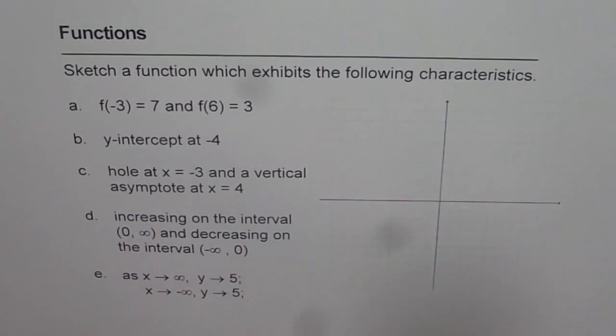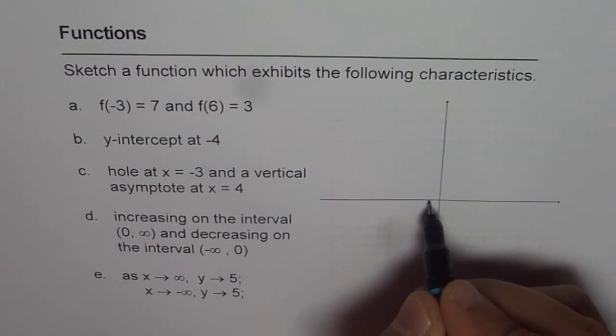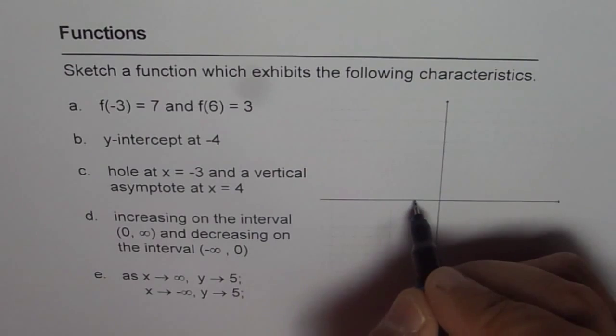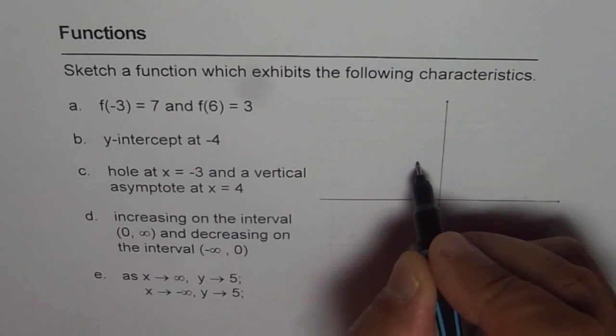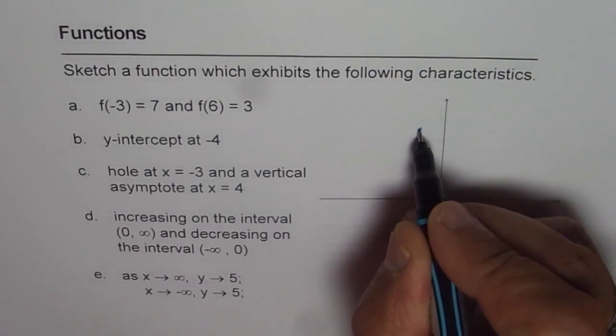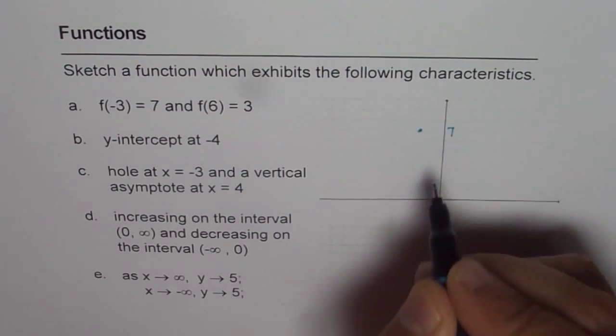f of -3 is 7, so -3 is 1, 2, 3, and 7 is approximately 1, 2, 3, 4, 5, 6, 7. So that is 7. So we are saying this point is 7.